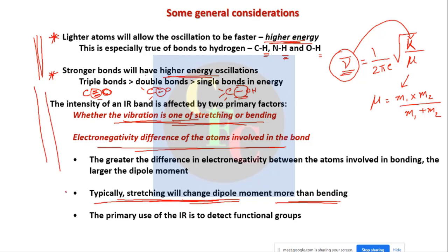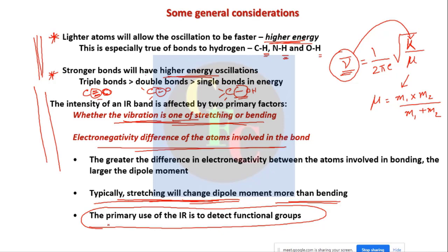The primary use of IR is to detect functional groups. Just by seeing IR spectroscopy, we cannot determine the whole molecule because IR spectra are usually very complicated. It is very difficult to assign each and every band, but with practice we can easily detect the functional groups present, which is the main use of IR spectroscopy in organic and inorganic chemistry.